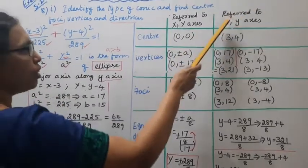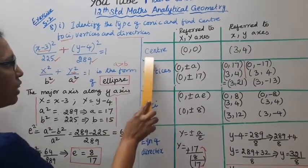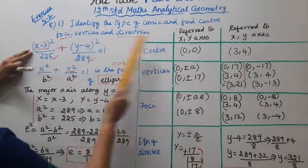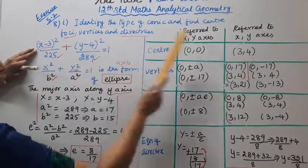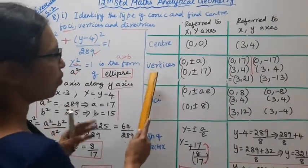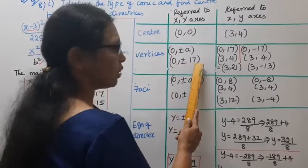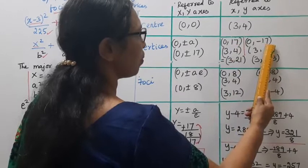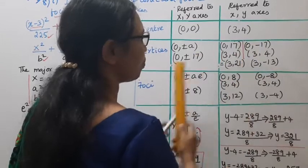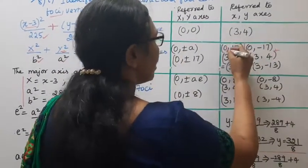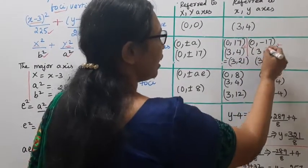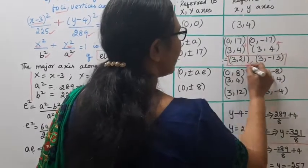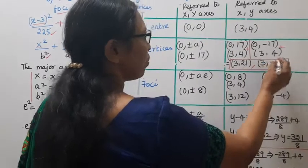Now referred to small x, y axes. Vertices: 0, ±17 becomes: 0 plus 3 equals 3, ±17 plus 4. So 3, 21 and 3, -13. These are the vertices.